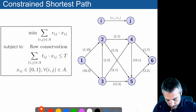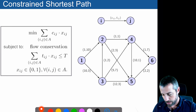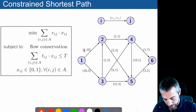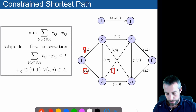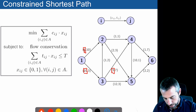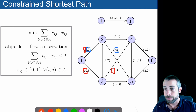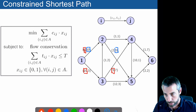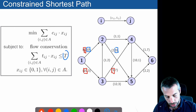In this problem, we want to find the shortest path from node 1 to node 6 in a graph represented here. We want to minimize the total distance, which is the first component of every pair of values on each edge. The second value is the resource you will consume — for instance, the amount of fuel or total elevation on a map. This resource consumed along the path is limited up to T, which is why it's called the constrained shortest path problem.